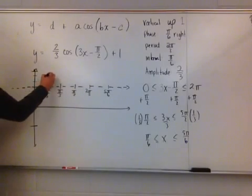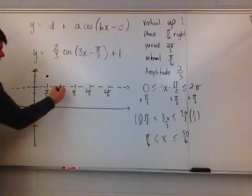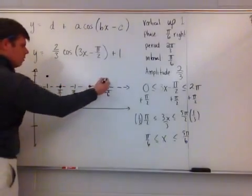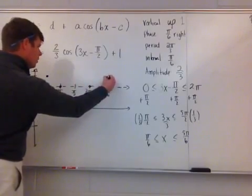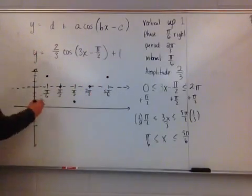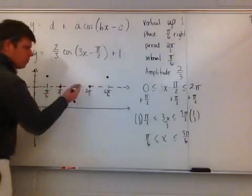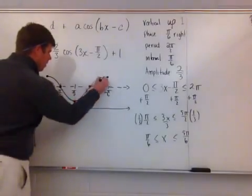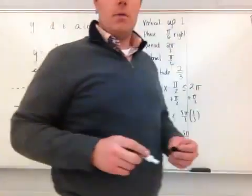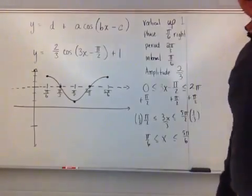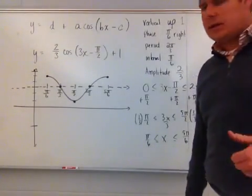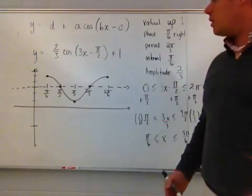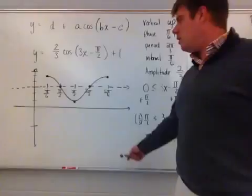Because it's cosine, my next value is a zero. My next interval is down to its minimum, then up to its zero, then back up to its maximum. I utilize the pattern, then take my values after the pattern has gone through and connect it with a smooth curve. After my smooth curve and points are all connected, I now have a final function drawn here of two thirds cosine times the quantity three x minus pi over two plus one. There's the graph for it.